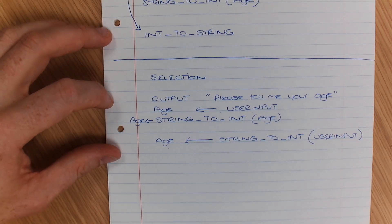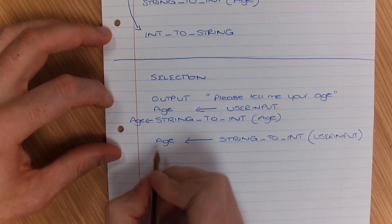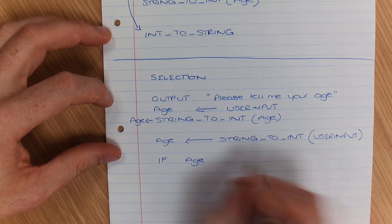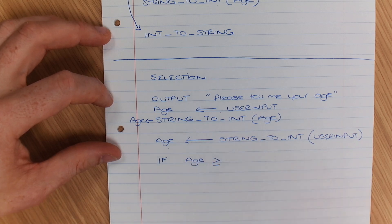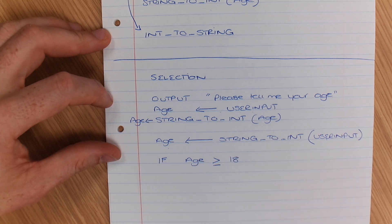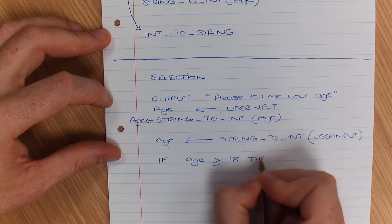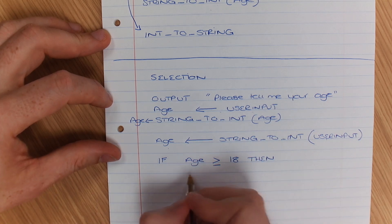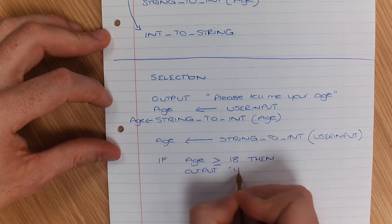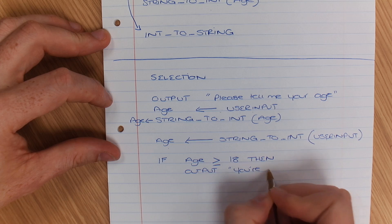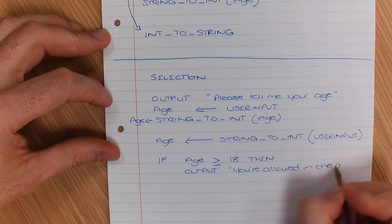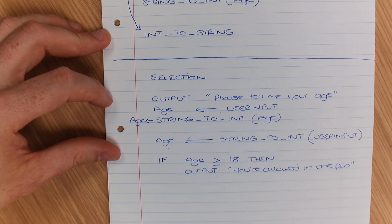So that is now, imagine I've typed in a number. I'm going to say, if age is greater than or equal to, because we're writing in pseudocode, 18, then output you're allowed in the pub.